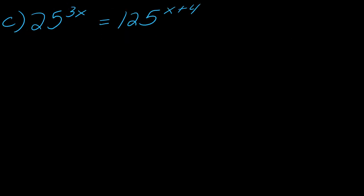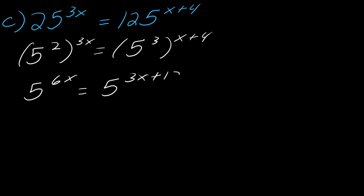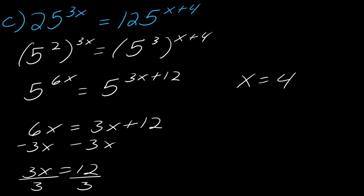Now for the last one. I have to rewrite both sides now. So this side I'll rewrite as 5 squared and then all of that to the 3x. And this side will be 5 to the 3rd to the x plus 4. Now I can go ahead and distribute. So this becomes 5 to the 6x on this side, and this side will be 5 to the 3x plus 12. Now I can take out the exponents. So I've got 6x equals 3x plus 12. I can subtract off the 3x from each side, so I get 3x equals 12. Divide both sides by 3, and I get x equals 4.